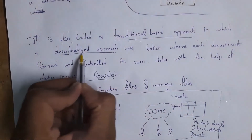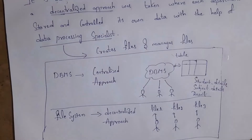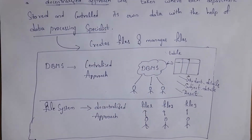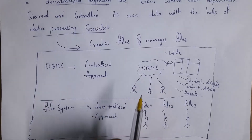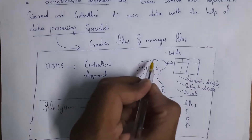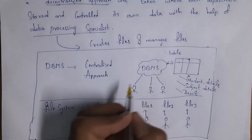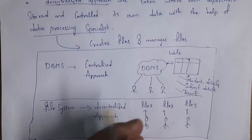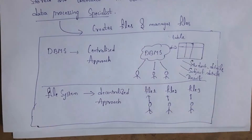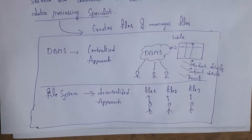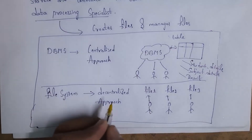What is the meaning of decentralized approach? In DBMS, we call it a centralized approach — meaning all data is stored in one place. For example, consider three employees: one wants to store student details, another wants to store subject details, and the third wants to store student results. In a single database, these employees can create three different tables and insert data. In a file system, we do not store data in one place; instead, we create three different files to store three different sets of information — so we call it a decentralized approach.